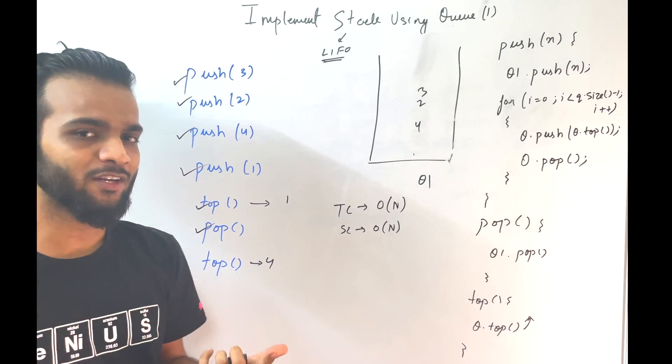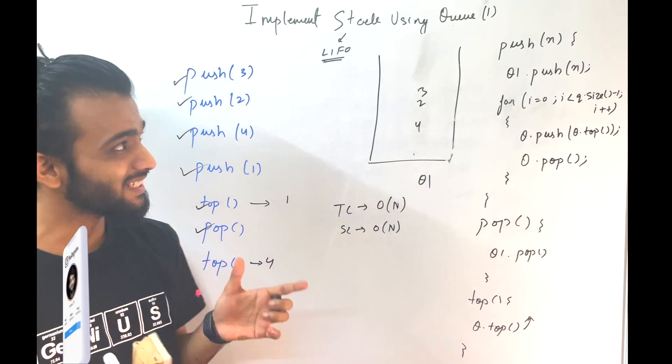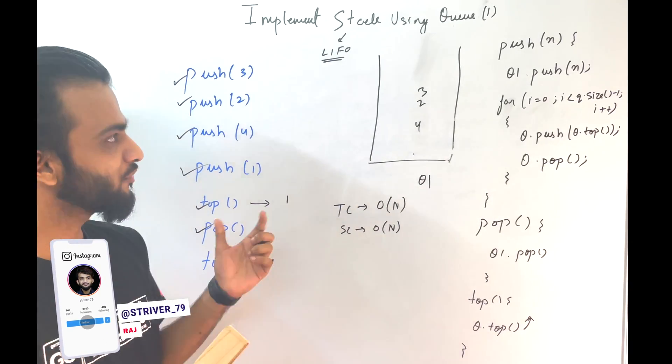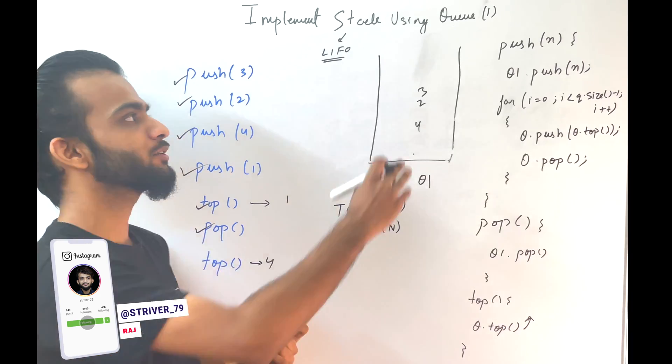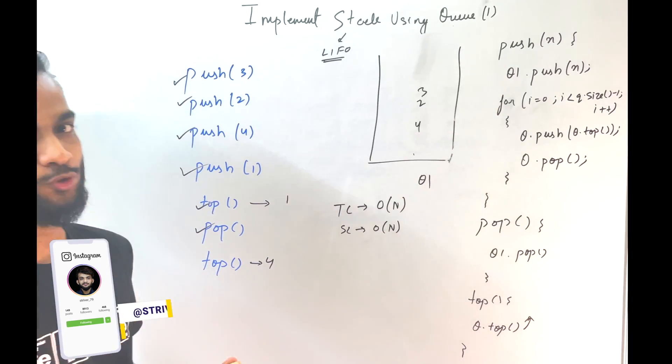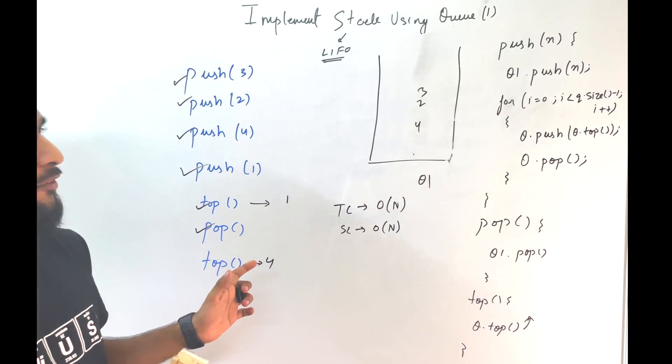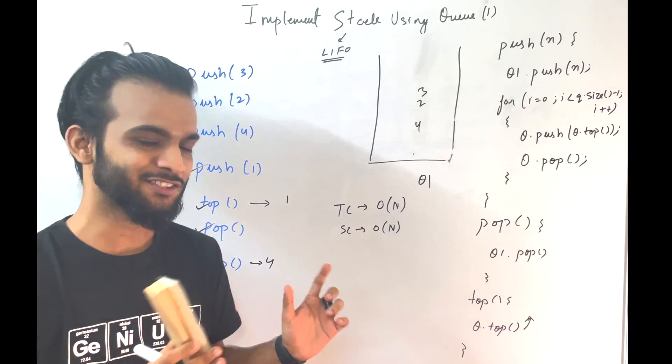So I hope you have understood both the approaches. If this question is asked in an interview, first say the two-queue approach, then optimize it to the single-queue approach. Don't just jump into the one-queue approach. I hope you have understood both of them.